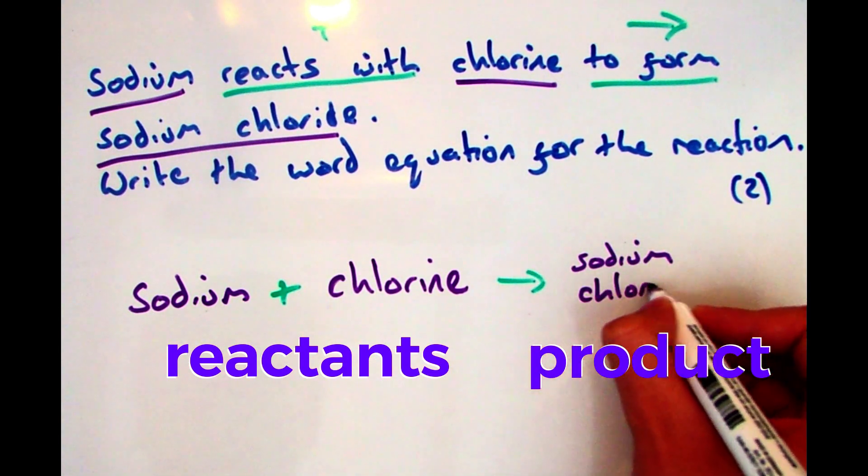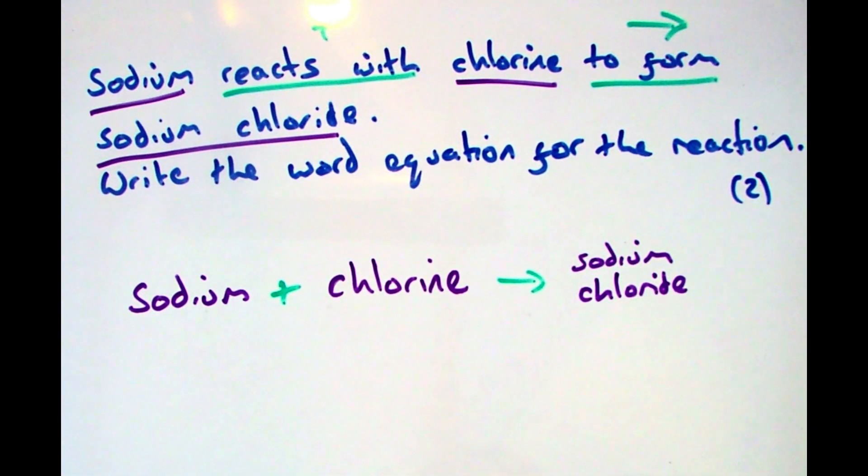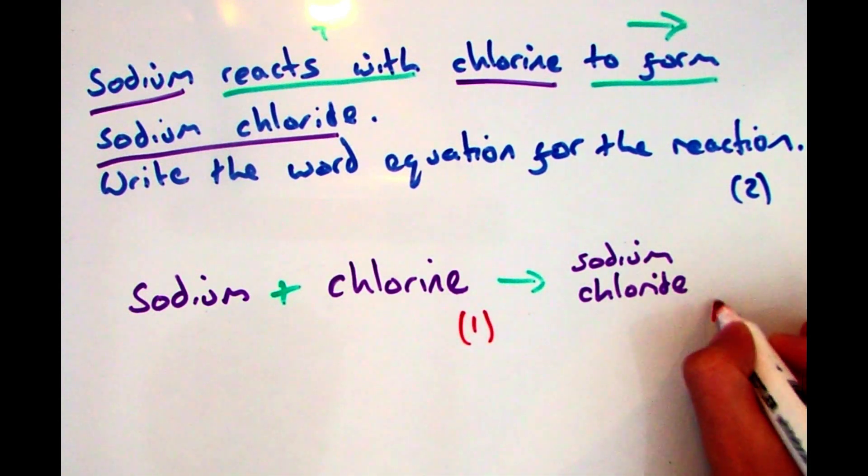So sodium plus chlorine, arrow, which means to form sodium chloride. And you would get one mark for sodium plus chlorine, and then the second mark for the sodium chloride being on the right hand side of the arrow.